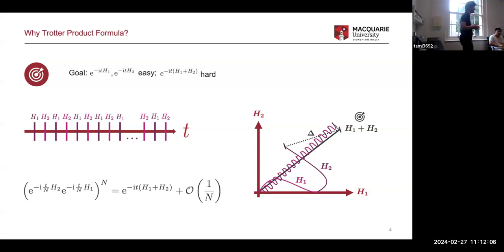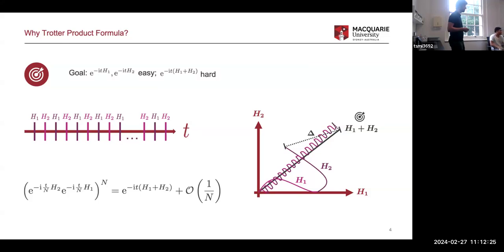Question from audience: You gave the example of H1 and H2 being the kinetic and potential terms. Can you give the intuition as to why it would be easy to implement the kinetic term, like on a quantum computer? Speaker response: Yes, I'm getting there — this will come on the next slide. I'll just explain it in a second.